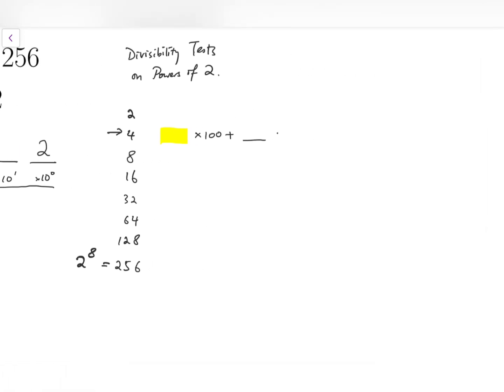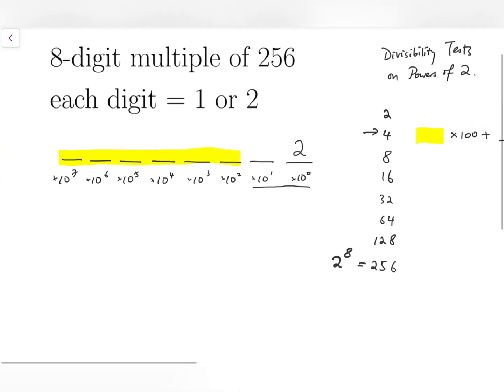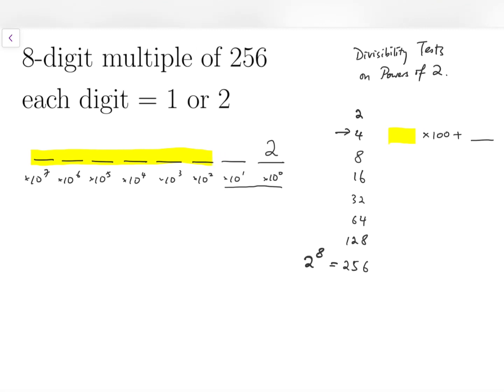So I can rewrite this as the yellow block times 25 times 4 plus the last two digits. So as long as the last two digits, as a two-digit number, is a multiple of 4, then we are good. So to choose either 1 or 2 for the tens digit, we have to choose 1 because 12 is a multiple of 4, but 22 is not.